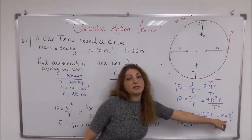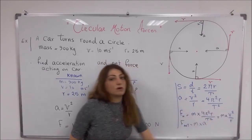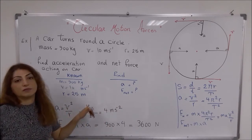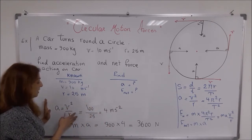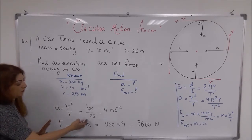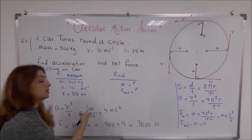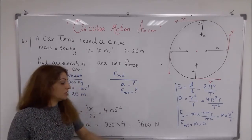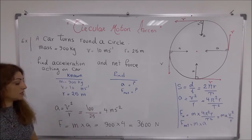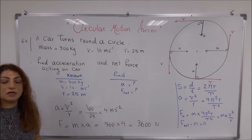Because we have already calculated v² / r as the acceleration, we can directly use F = m × a. So: net force = mass × acceleration = 900 × 4 = 3600 Newtons. You can use the other equation and the answer would be the same, because v² / r is the acceleration we already found. So the final answers are: acceleration = 4 m/s², and net force = 3600 Newtons.